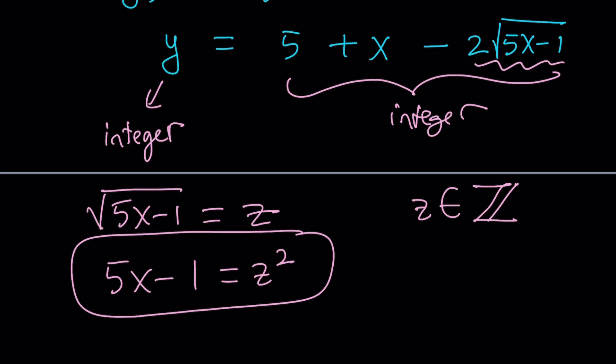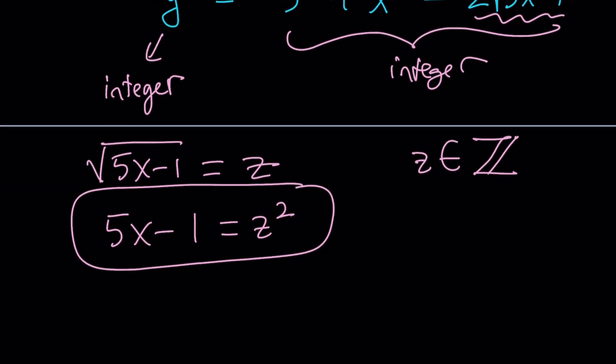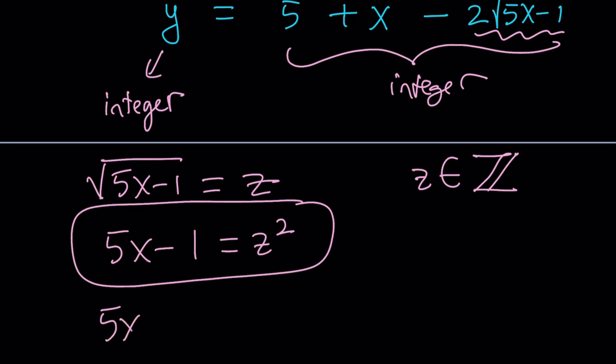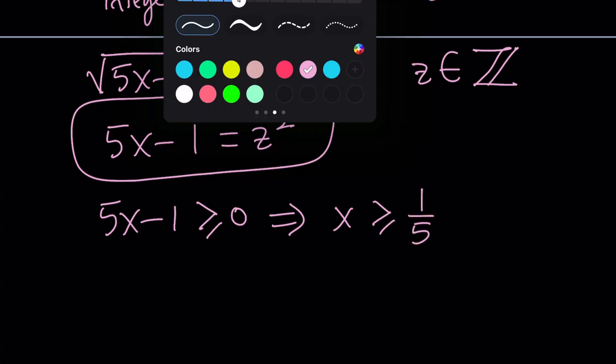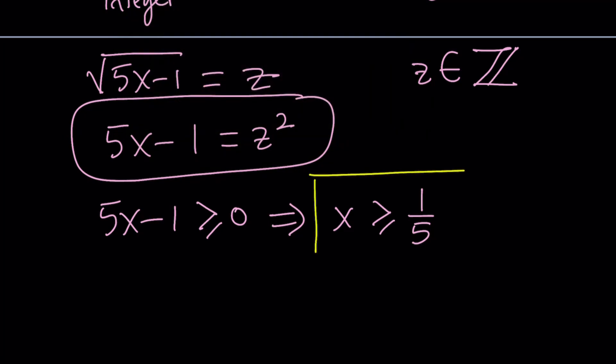So we have this requirement that 5x minus 1 needs to be the square of an integer. So that's important. But that's not the only thing we're going to look at. We're also going to be looking at something like this. 5x minus 1 is inside the radical. Therefore, it needs to be greater than or equal to 0. This is a domain requirement. And from here, we're going to get x is greater than or equal to 1 fifth. So that gives us a bound, a lower bound for x.